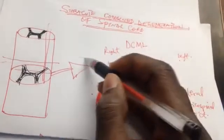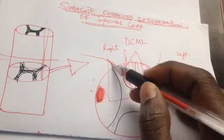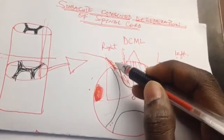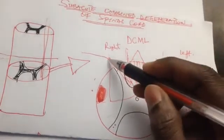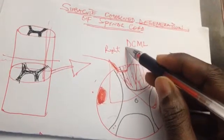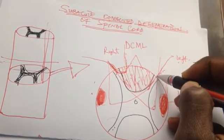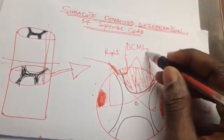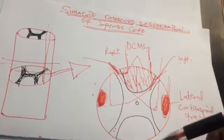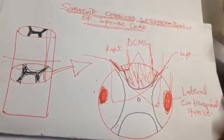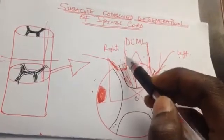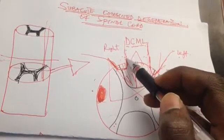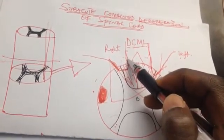Fibers carrying sensation enter the spinal cord through the dorsal root. Fibers carrying vibration and proprioception ascend without crossing; they cross at the level of the medulla oblongata or slightly above. These fibers form the dorsal spinothalamic tract and the dorsal column medial lemniscus system, whose function is to carry vibration, two-point discrimination, and proprioception.